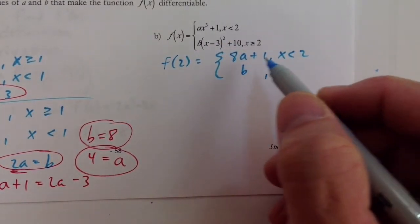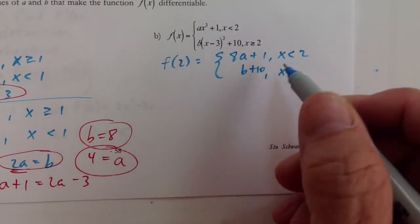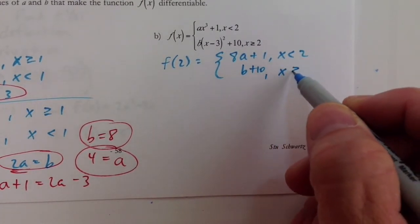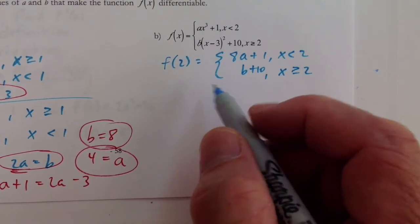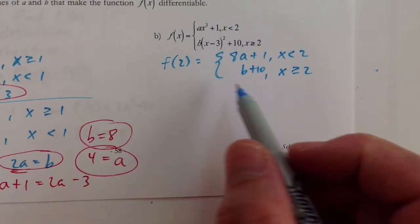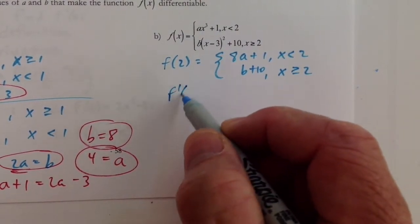For x, oh shoot, that's b plus 10. Okay, for x values that are greater than or equal to 2. So we have one equation. And I'll save that though, because I like doing it this way first.